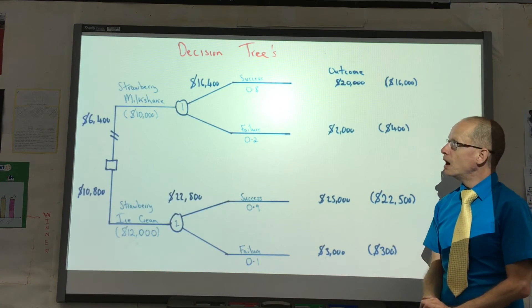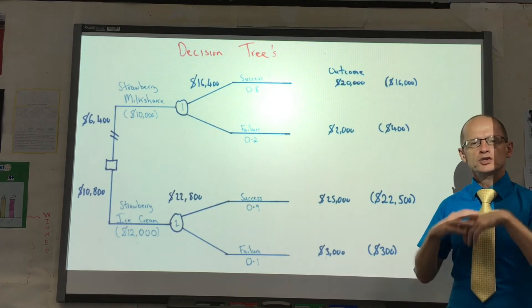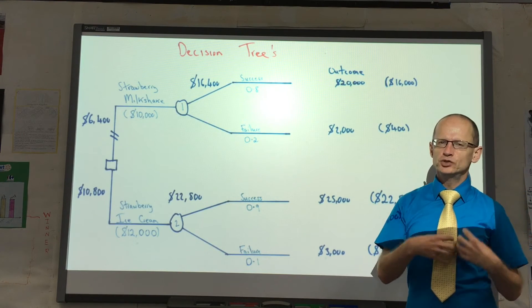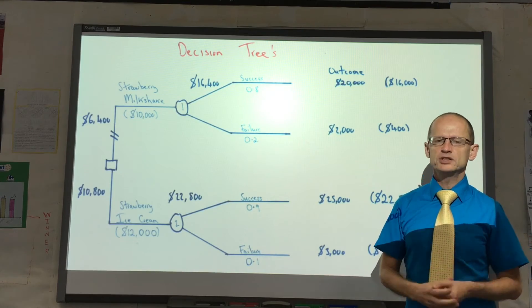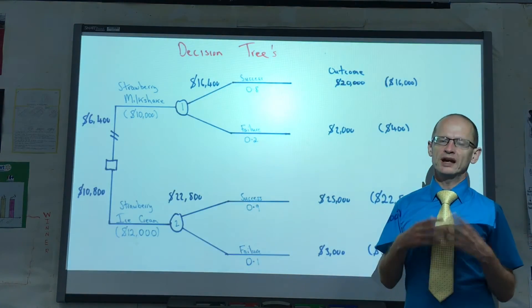So that should be reasonably straightforward. Obviously decision trees ensure that a business tries to use high quality information, objective information to ensure that it is making the correct decision.